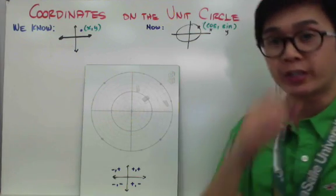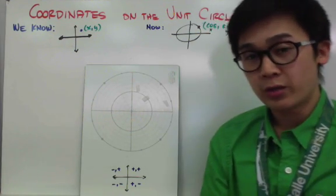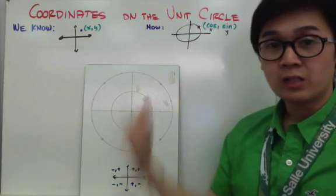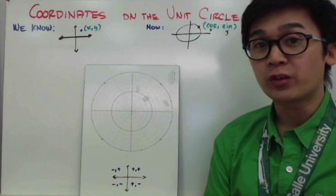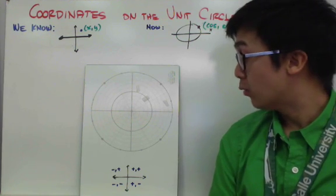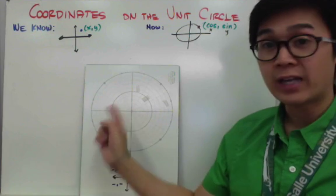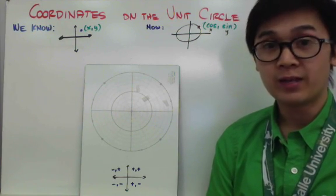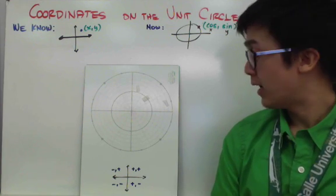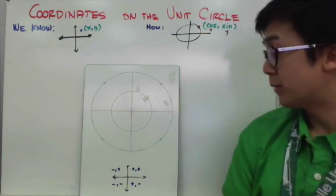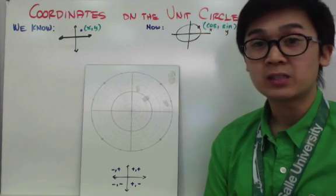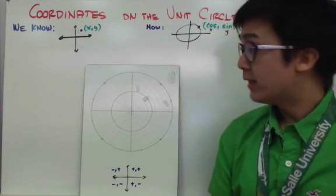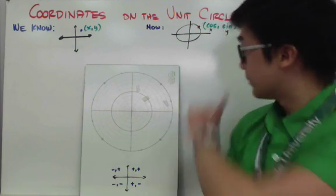One important thing to know about the unit circle is the sign of the values in each quadrant. For the first quadrant, the values of cosine and sine are both positive. For the second quadrant, the values are negative and positive. For the third quadrant, both are negative. And for the fourth quadrant, cosine is positive and sine is negative.